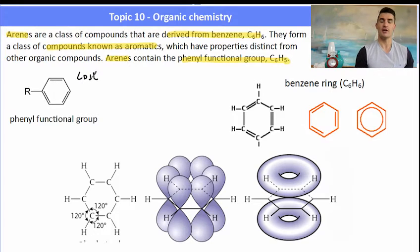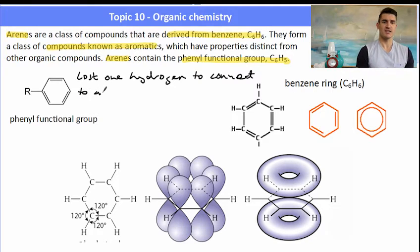It's lost a hydrogen because that carbon must be connected to something else that's part of the chain. So when we're describing that functional group, we would have some molecule and then we would have a benzene ring sticking off it. And that benzene ring will usually have the formula C6H5.